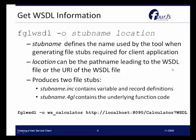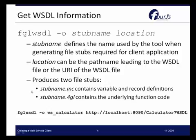The first thing, once you've identified the web service that you want to use, is to get the WSDL information. That might be a file, or a URL location that you're using to extract the information needed. The FGL WSDL tool extracts from the WSDL location or file the globals, variable and record definitions, that are going to be in a globals file with a .inc extension, as well as the underlying function code that you'll be able to utilize in your program, and that will be a 4GL file.